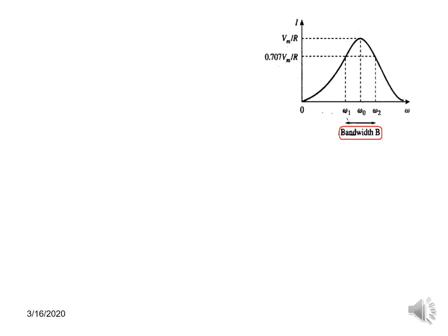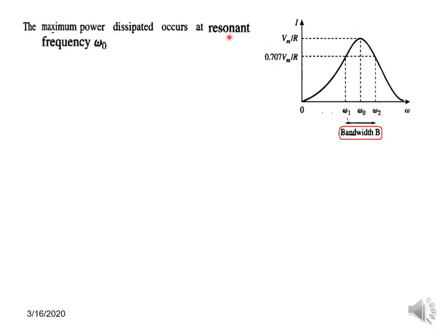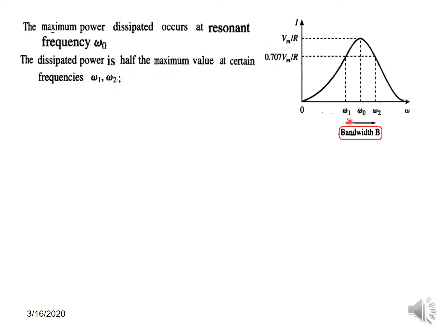Some more theoretical information. As we saw, at the resonant frequency the amplitude is Vm/R. These two frequencies on either side are called the half-power frequencies, where the power becomes half. At these points, the current is 0.707·(Vm/R), which can also be written as Vm/(R√2). The difference between the two half-power frequencies is called the bandwidth.